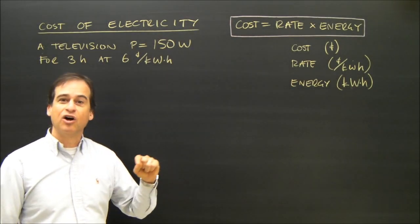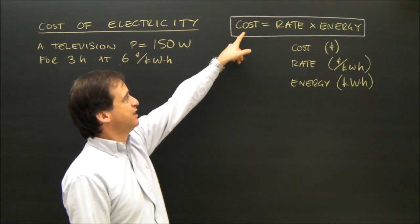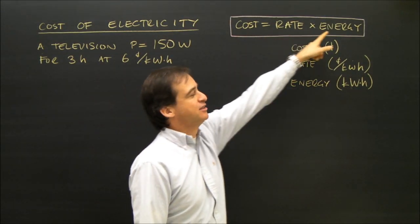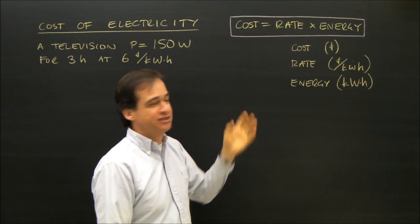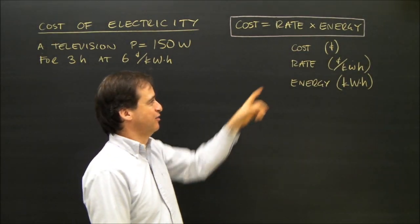The formula we use to calculate the cost of using an electrical appliance is cost equals rate times energy. The cost is in cents, not dollars, so that's a unit we're not used to using in everyday life very much.